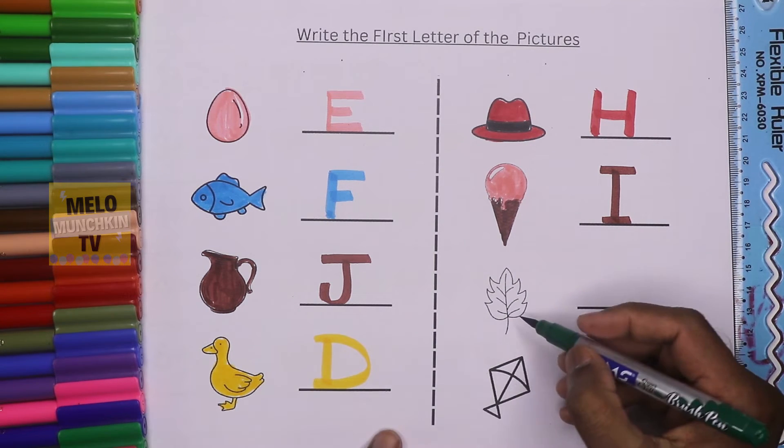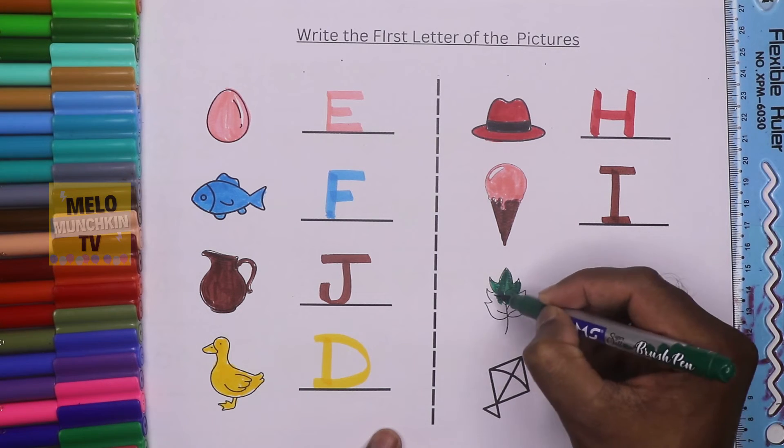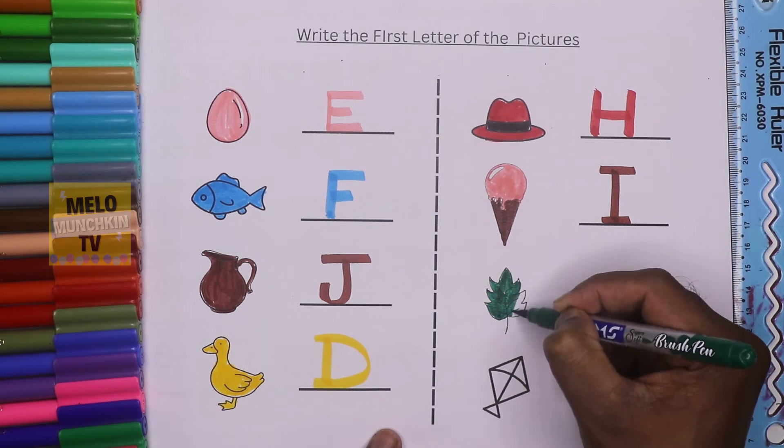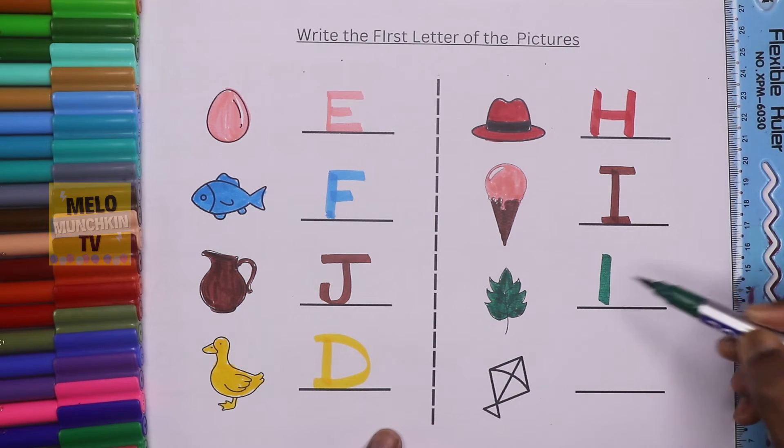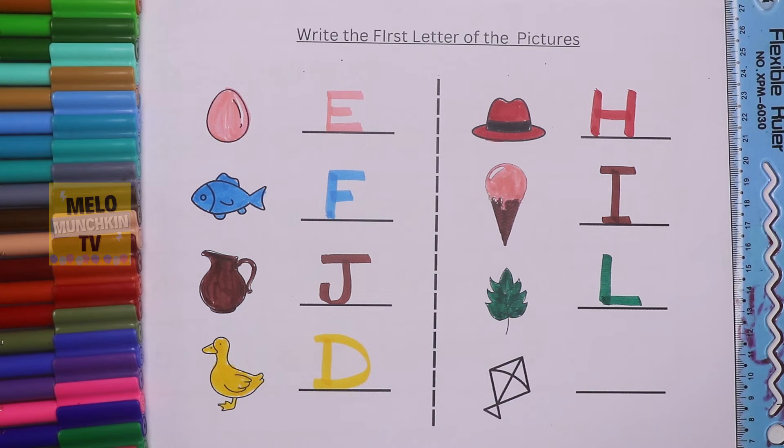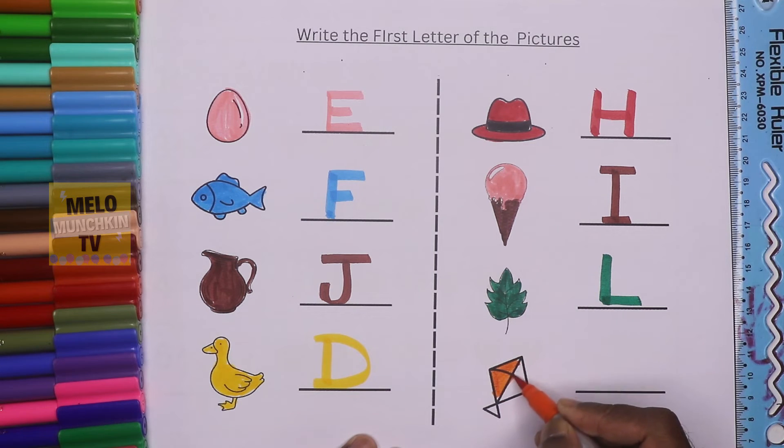This is leaf, and I'm using green color to color this leaf. Leaf starts with the letter L, so I'll write L. L for leaf. Next image is kite. This is kite, so I'll use orange color to color this